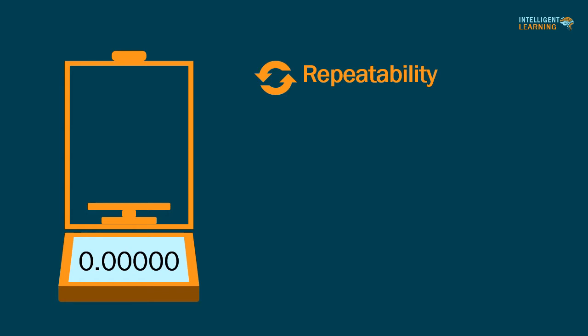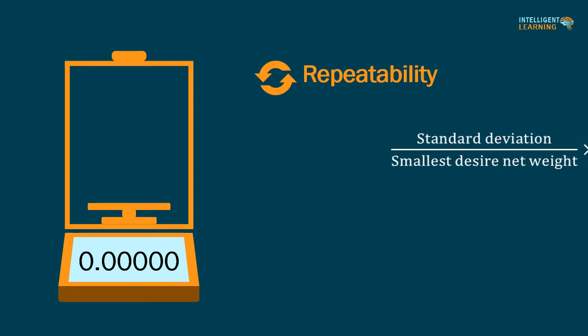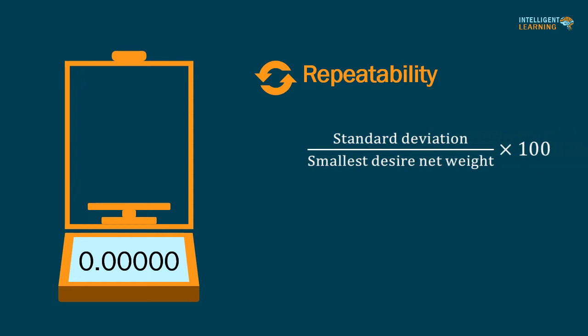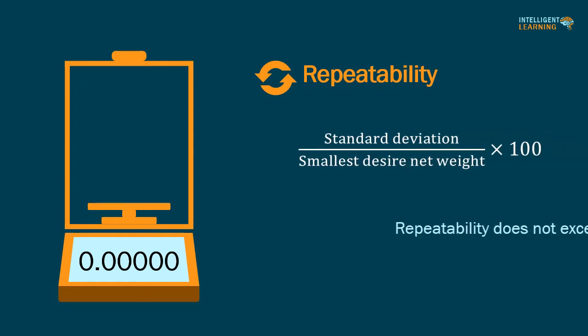Repeatability is assessed by weighing a test weight not less than 10 times. Repeatability is calculated as the standard deviation of the weighed values divided by the smallest desired net weight, and must not exceed 0.10%.